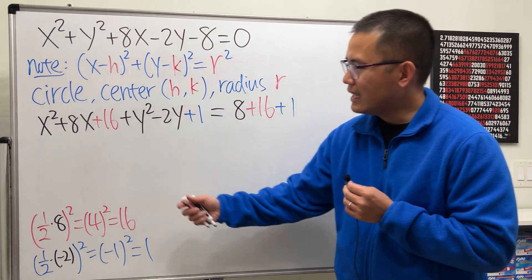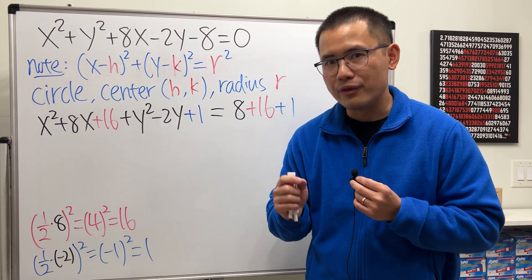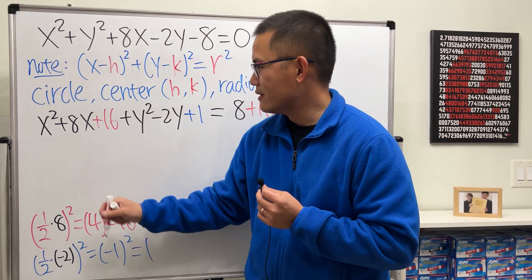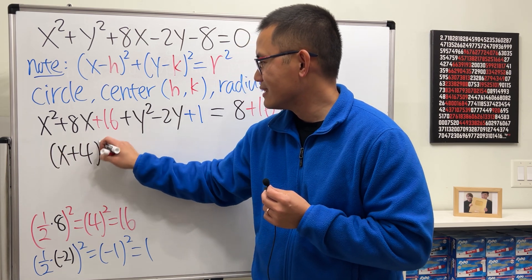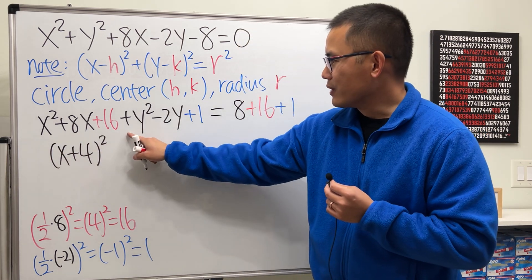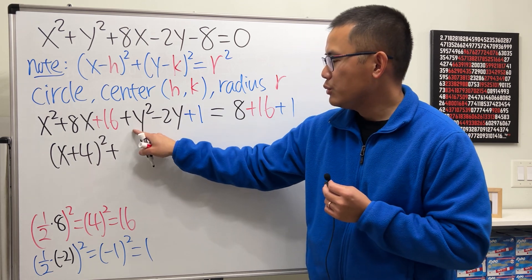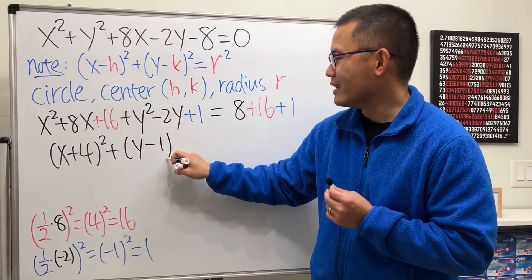That said though, notice that these three terms, we can factor it, and it's a perfect square. It's just (x+4)(x+4). We can write that as (x+4)². For this, first, make sure that you put the plus right away, and then you factor it, you will get (y-1)².